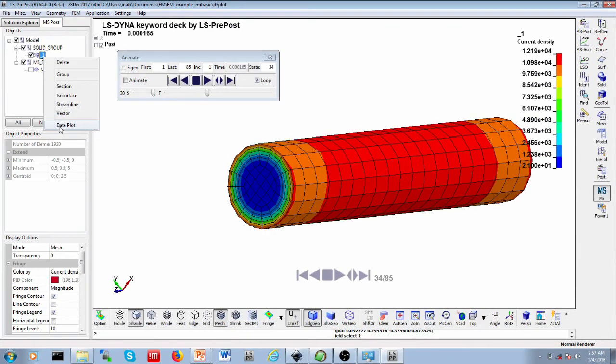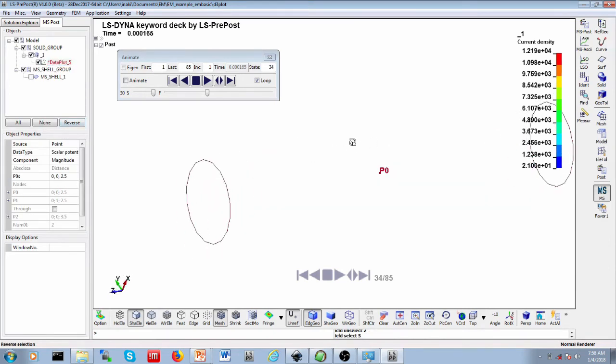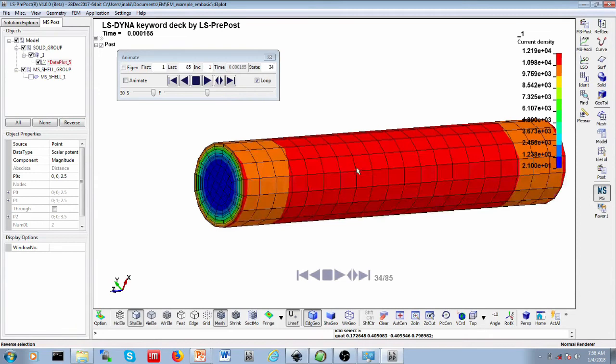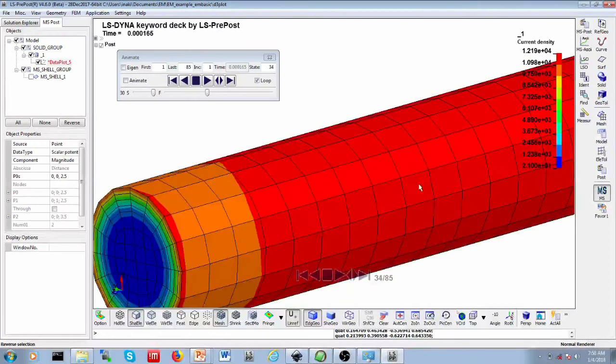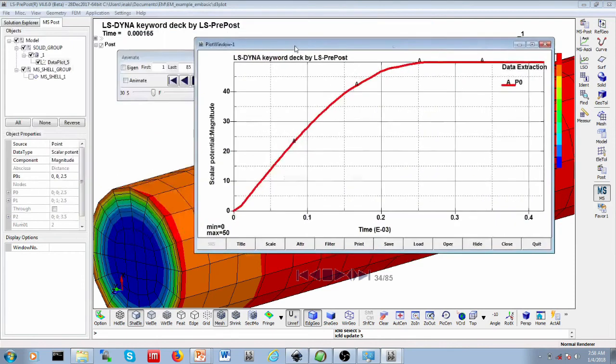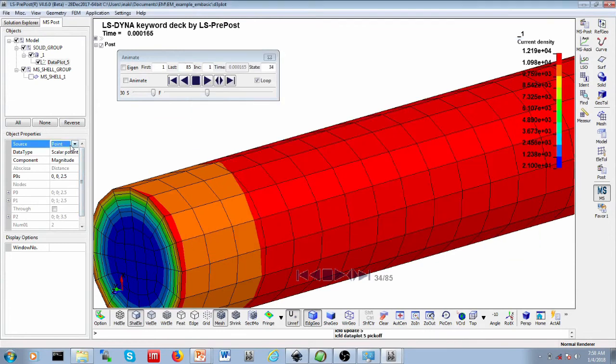Another tool here which I'd like to introduce is the data plot object. If you right click on your solid you can create a data plot object and this will allow you to extract data. If you do by point, you see that by default it has put my point in the middle of the conductor. If I update it will give me the value, the chosen value here, the scalar potential, function of time for this point.